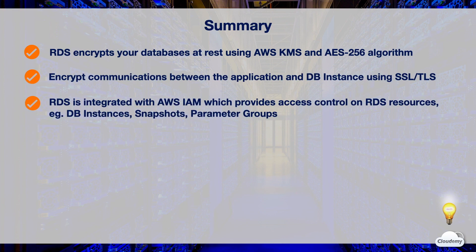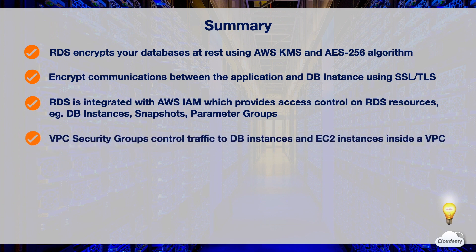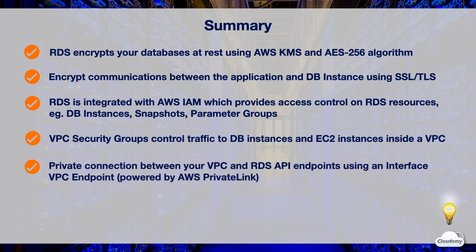RDS is integrated with AWS IAM. It provides you the ability for your IAM users and groups so that they can control actions on specific resources, such as DB instances, snapshots, parameter groups, and options groups. You can use VPC security groups to control traffic into or out of DB instances from EC2 instances inside a VPC. You can establish a private connection between your VPC and RDS API endpoints using an interface VPC endpoint that is powered by AWS PrivateLink.